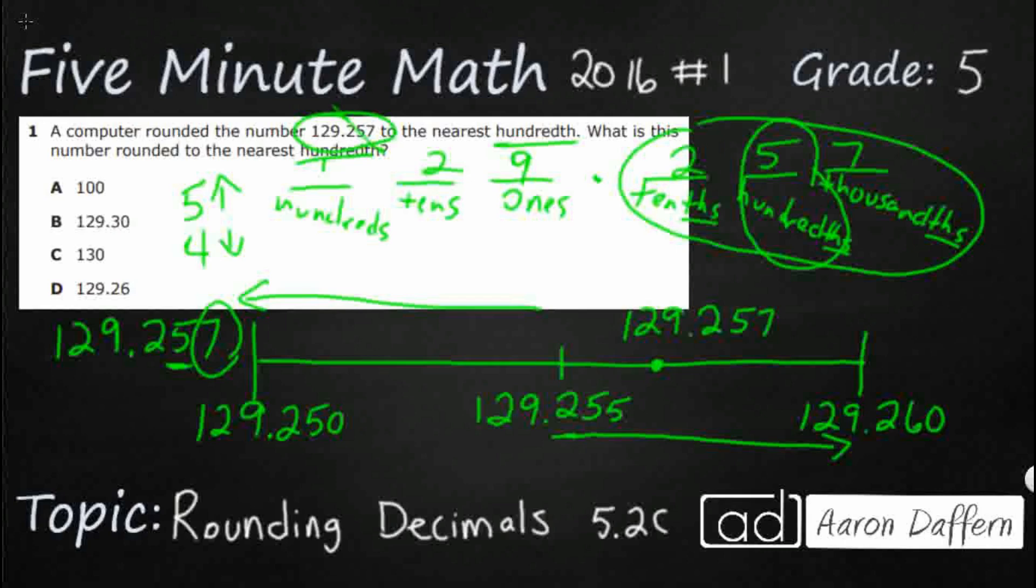Now, which digit goes up or down is going to be this digit that we underline right here. So this 57 is going to round up to a six. We're going to add that one right there. And so we're going to get 129.26—and it's 260, but we can go ahead and drop that zero, so it's 26. The answer here is D.